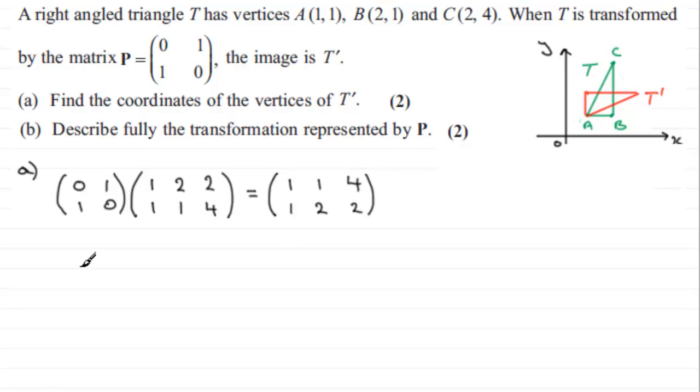Anyway, it wanted us to write down the coordinates of those vertices. So if we just say therefore the coordinates of T prime are—and they're going to be (1,1) as we have here, (1,2), and (4,2).